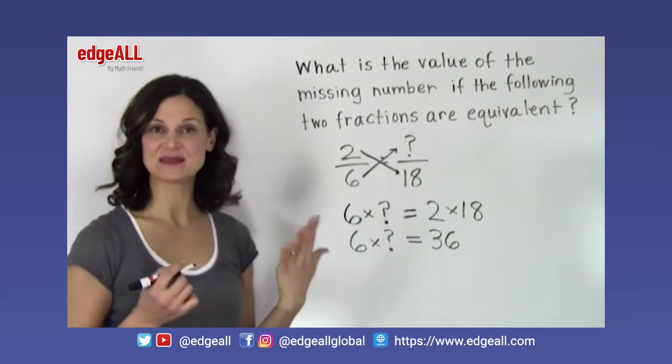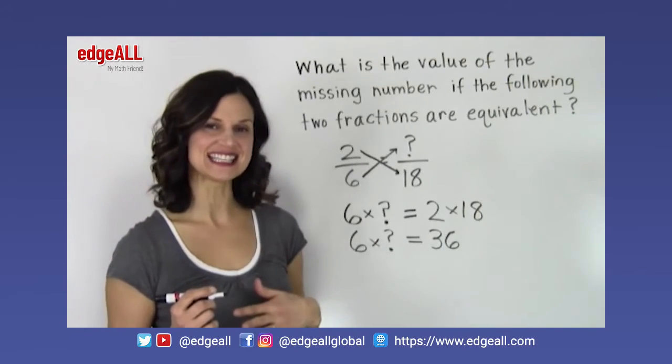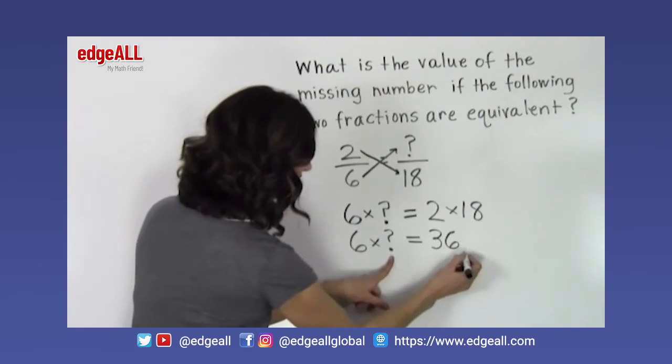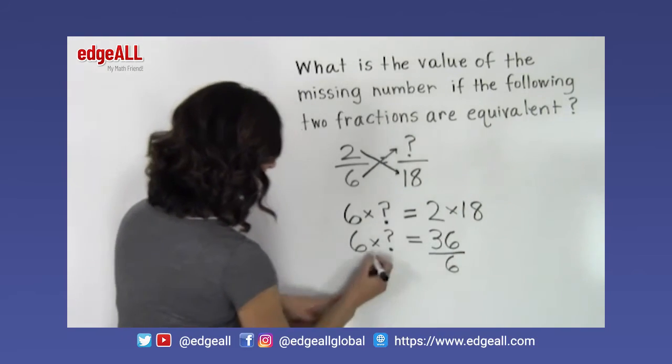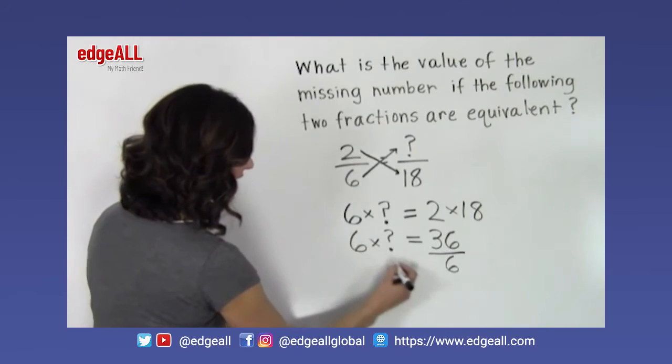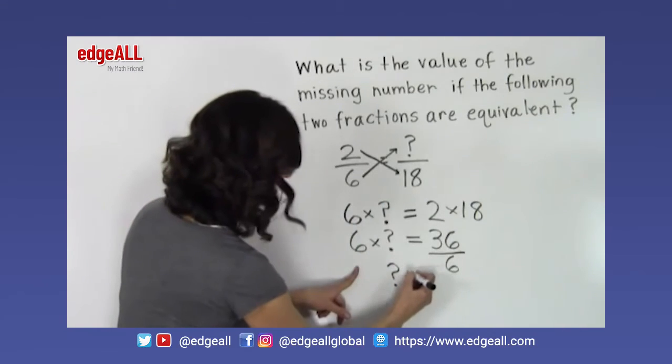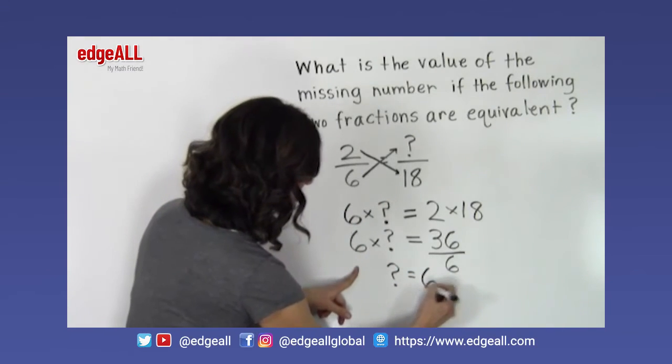So 6 times some number equals 36. We know in order to find that number, we need to divide 36 by 6. And we'll end up with our question mark equaling 36 divided by 6, which is 6.